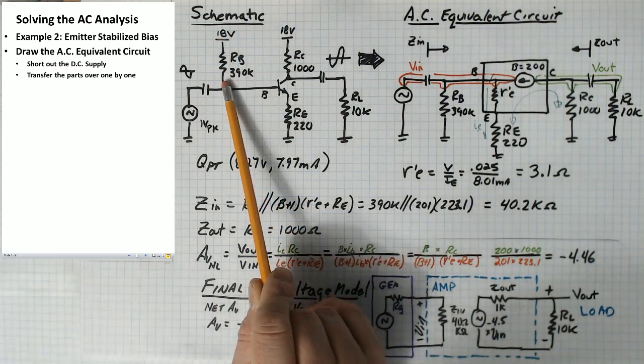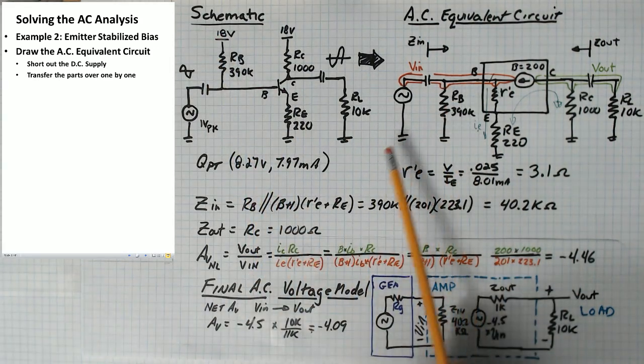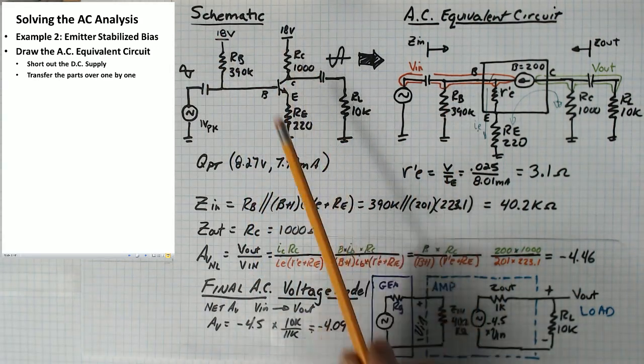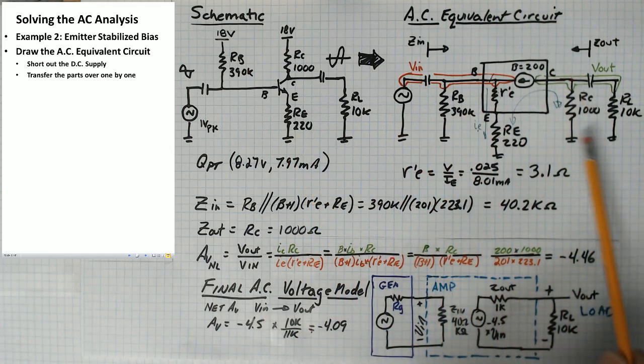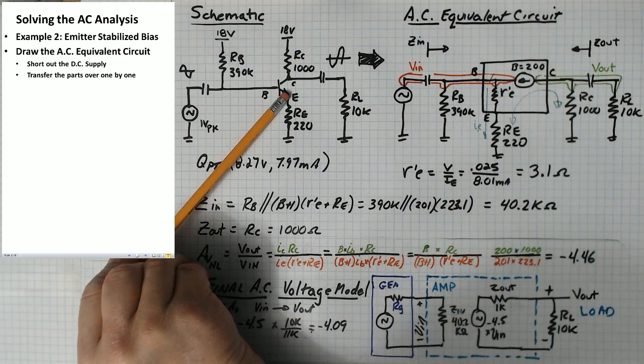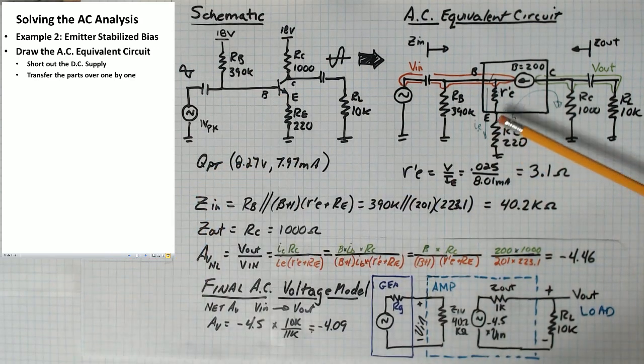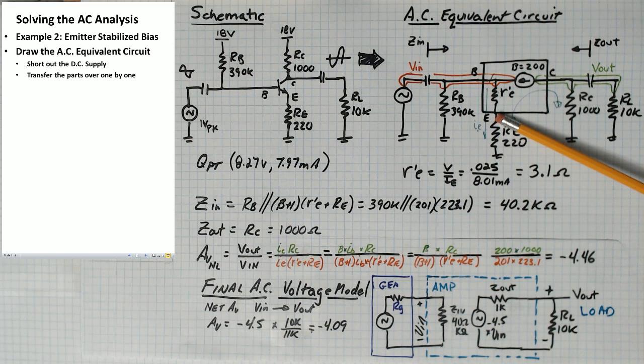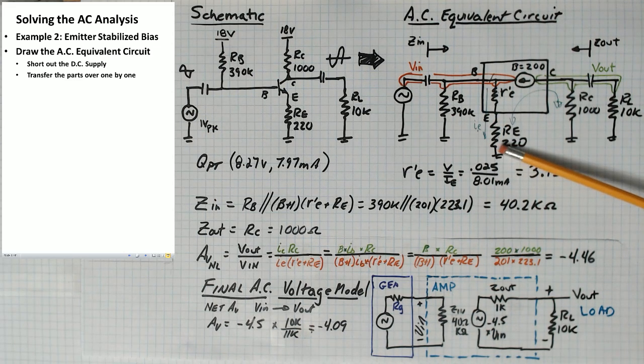We short out supply and then we transfer the parts over one by one. So if this is ground, 390k is between the input and ground. RC is between the output and ground. And the emitter resistor, one side is connected to the emitter, the other side goes to ground.